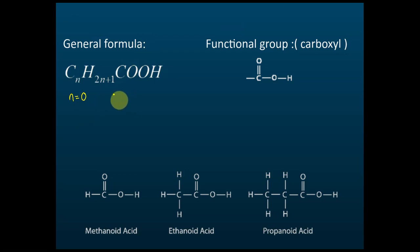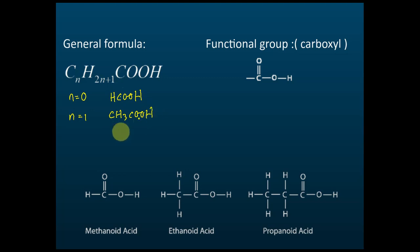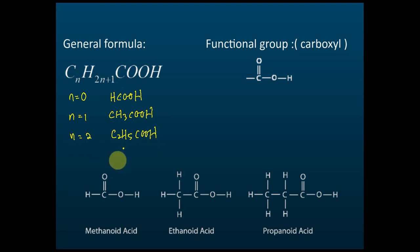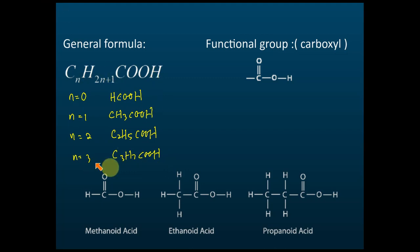When n equals zero, the formula becomes HCOOH. When n equals one, it becomes CH₃COOH. When n equals two, it becomes C₂H₅COOH. And when n equals three, it becomes C₃H₇COOH. So these are the first four carboxylic acids derived from the general formula.